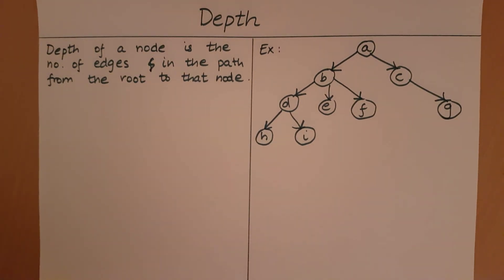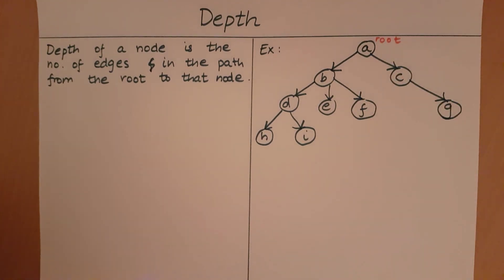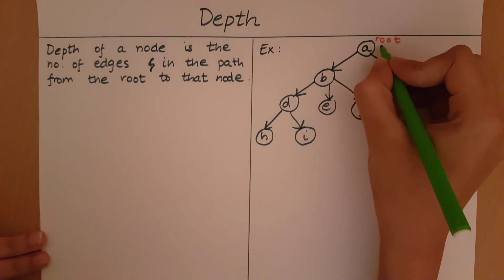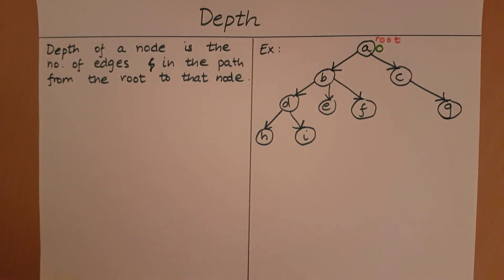Let's start calculating the depth of each node, starting at the root. The root in this case is A. The number of edges in the path from A to the root, which is itself, is zero — the path from A to A has no edges. So A has a depth of zero.